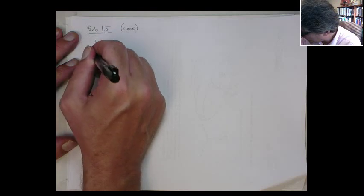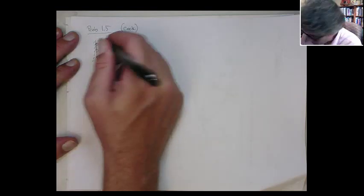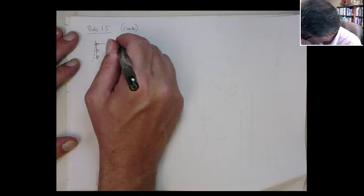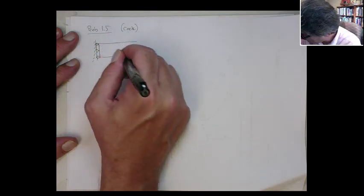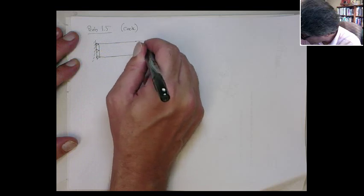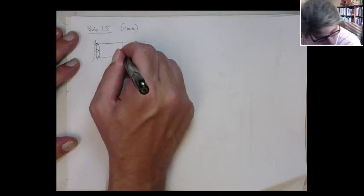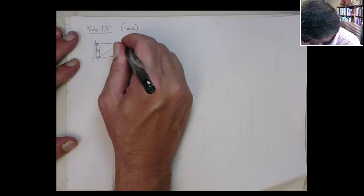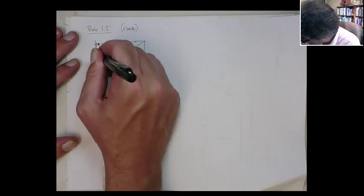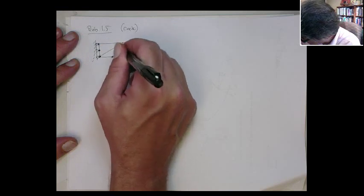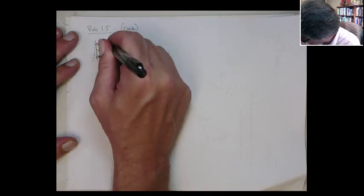So here we have the following problem, there's our mesh, and I have four linear strain triangle elements, go like this, here, here, here, here, here, here, and so on and so forth.